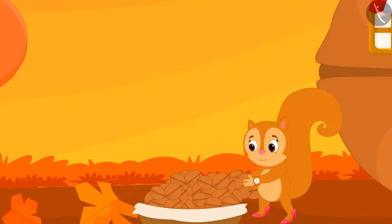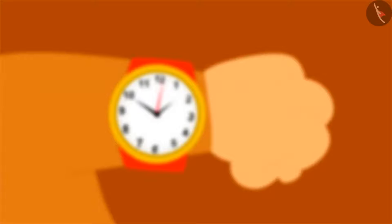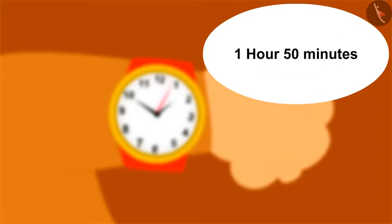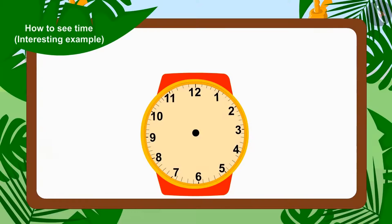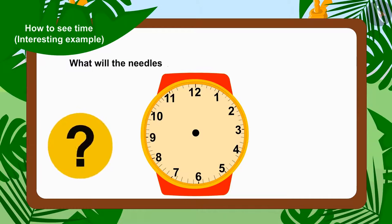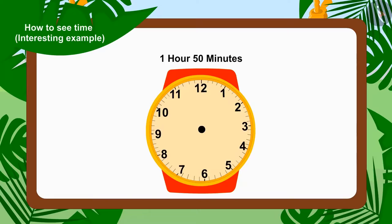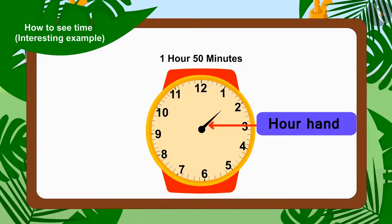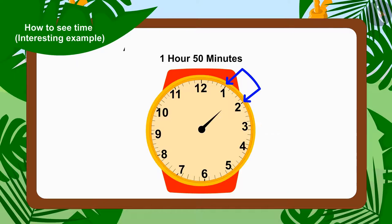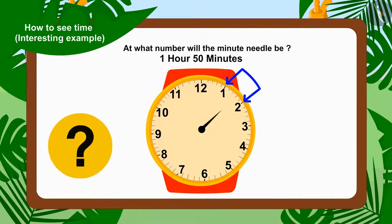Chanda was so happy that she forgot about the time. Now, when she saw the time in the clock, it was 50 minutes past 1. Children, can you tell us what the needles of the clock will look like at 1 hour 50 minutes? Because a few minutes have passed since 1, the hour needle will be between numbers 1 and 2. And at what number will the minute needle be to show 50 minutes?